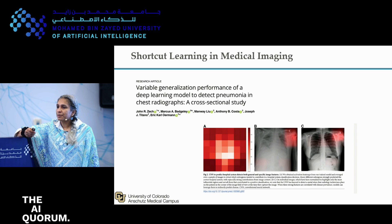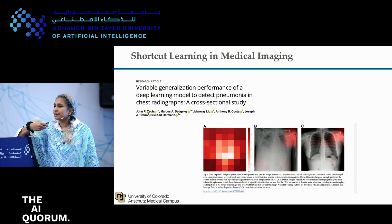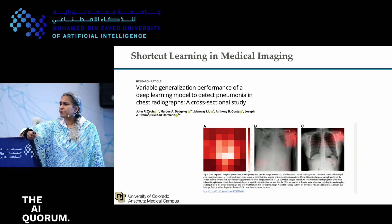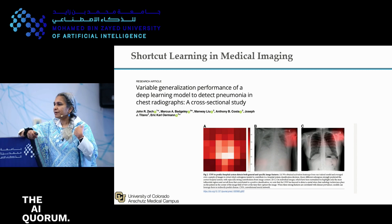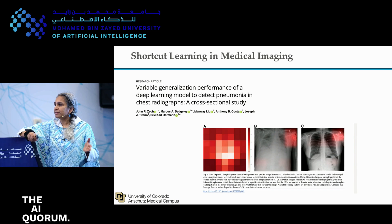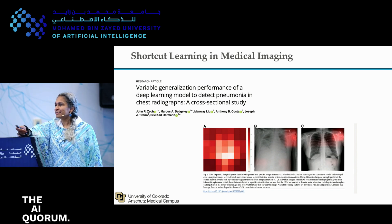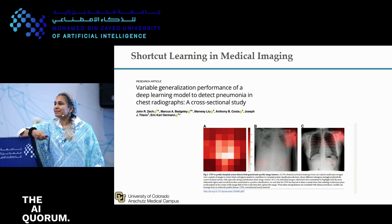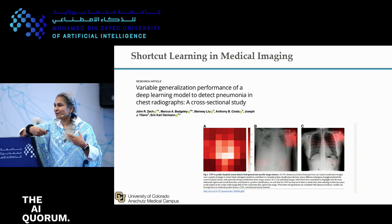Shortcut learning: these models pick up on spurious signals. A model for COVID or pneumonia was picking up on the marker on the chest image that says left or right, which indicates whether the patient was in a prone or supine position — whether they were in an emergency room or a walk-in clinic. All the model was learning was the fact that this patient came from an emergency room, not something about disease severity. This gets even more complicated in a federated setting because we can't see all the data from the other side.